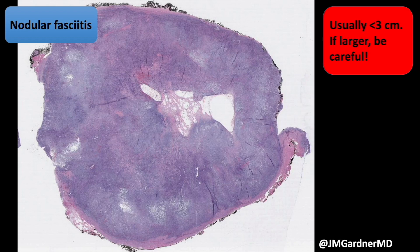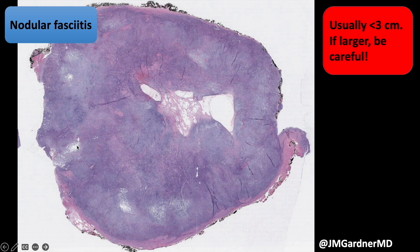Sometimes nodular fasciitis can arise in the dermis with no connection to the fascia — I've seen that before. The other thing beautifully demonstrated here in the middle, and more subtle down at the edges, are these myxoid cystic spaces. Cystic degeneration is common in nodular fasciitis and is an incredibly useful diagnostic clue. It's not always this prominent, but usually you'll find little areas where the tumor cells are starting to fall apart.